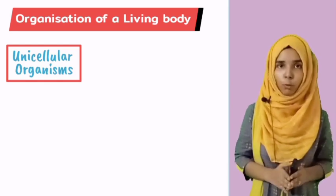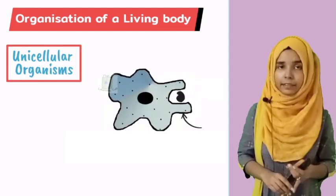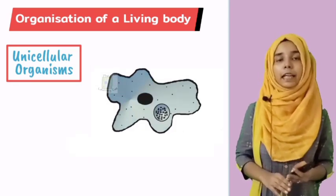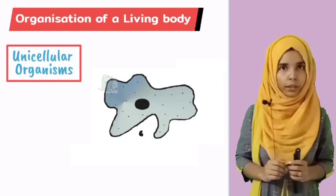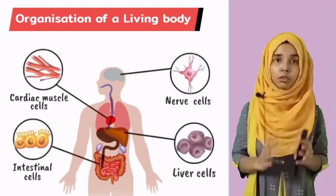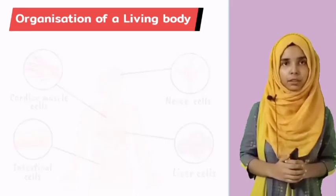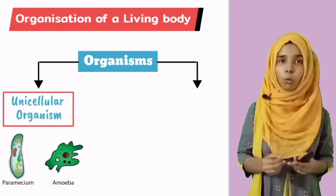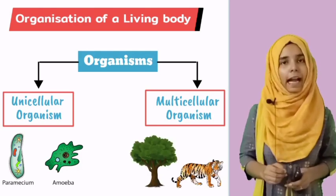In unicellular organisms, the single cell performs all functions — taking in food, digesting it, removing excretory products — and that is why these unicellular organisms can live on their own. However, in most organisms this is not the case. Here many cells work together to form more complex organisms, which are known as multicellular organisms. Examples of multicellular organisms include most plants and animals.